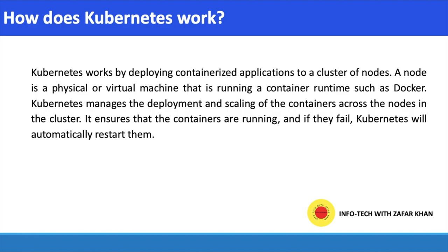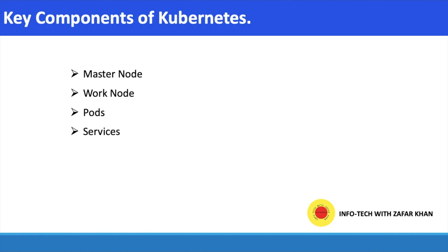Kubernetes works by deploying containerized applications to a cluster of nodes. A node is a physical or virtual machine that is running a container runtime such as Docker. Kubernetes manages the deployment and scaling of containers across the nodes in the cluster, and ensures that if a container fails, Kubernetes will automatically restart it.